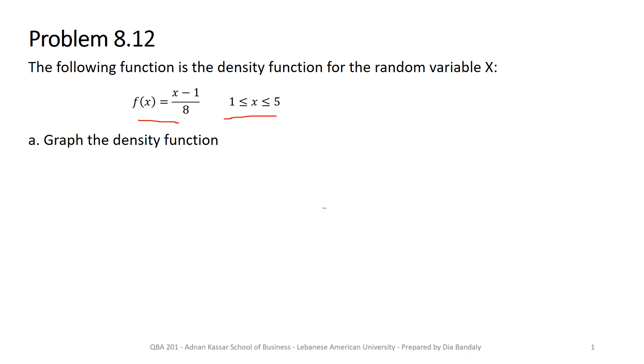So we want as a first part to graph the density function. Now the density function as given to us like that may not be clear for us how it looks like. So let me do some restructuring of that PDF. What I'm going to do, I will divide the two parts of the numerator which are the x and the minus one by the common denominator. So we have x, we have minus one, I'll divide each one of them by the denominator. So it becomes x/8 minus 1/8 and this will be my final form.